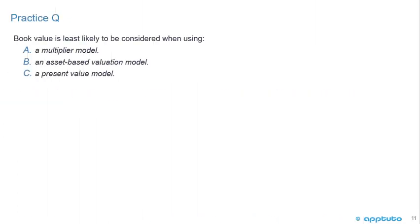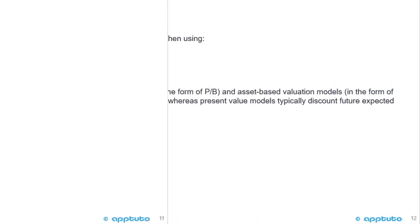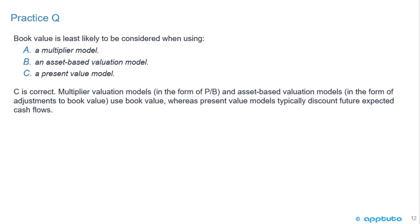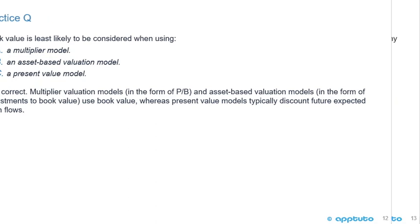Another question: Book value is least likely to be considered when using: A) a multiplier model, B) an asset-based valuation model, or C) a present value model. C is correct. Multiplier models in the form of price-to-book use book value. Asset-based valuation models use book value and sometimes adjust it. Present value models typically discount future expected cash flows, so book value is least likely to be considered when using a present value model.